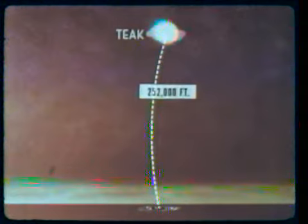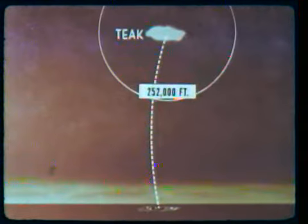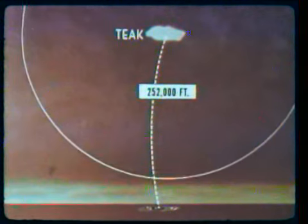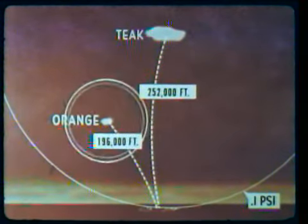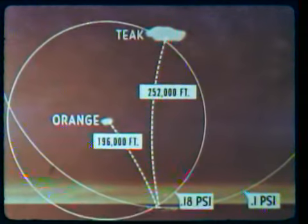Johnston Island, at a slant range of 252,000 feet from shot Teak, the overpressure measured approximately 0.1 pounds per square inch. The same station, at a slant range of 196,000 feet from shot Orange, measured 0.18 pounds per square inch.